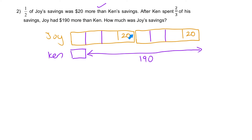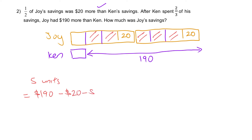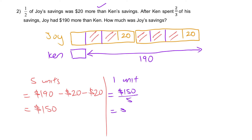From this analysis, we can find that one, two, three, four, five units — five units is equal to $190 minus $20, which gives you $170. Wait — that gives us $150. From here we can figure out what one unit is: $150 divided by five equals $30. So every unit here is $30, $30, $30, $30, $30.